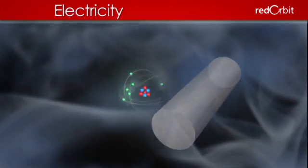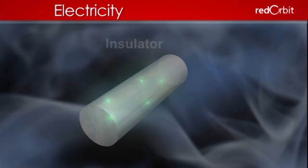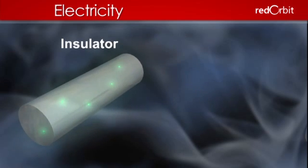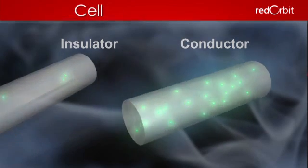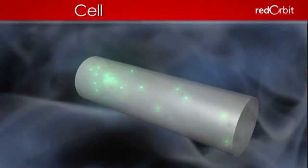If a material holds onto its electrons tightly, it is known as an insulator. If its electrons are more loosely bound, it's called a conductor. When a large number of free electrons pile up at one end of a conductor,